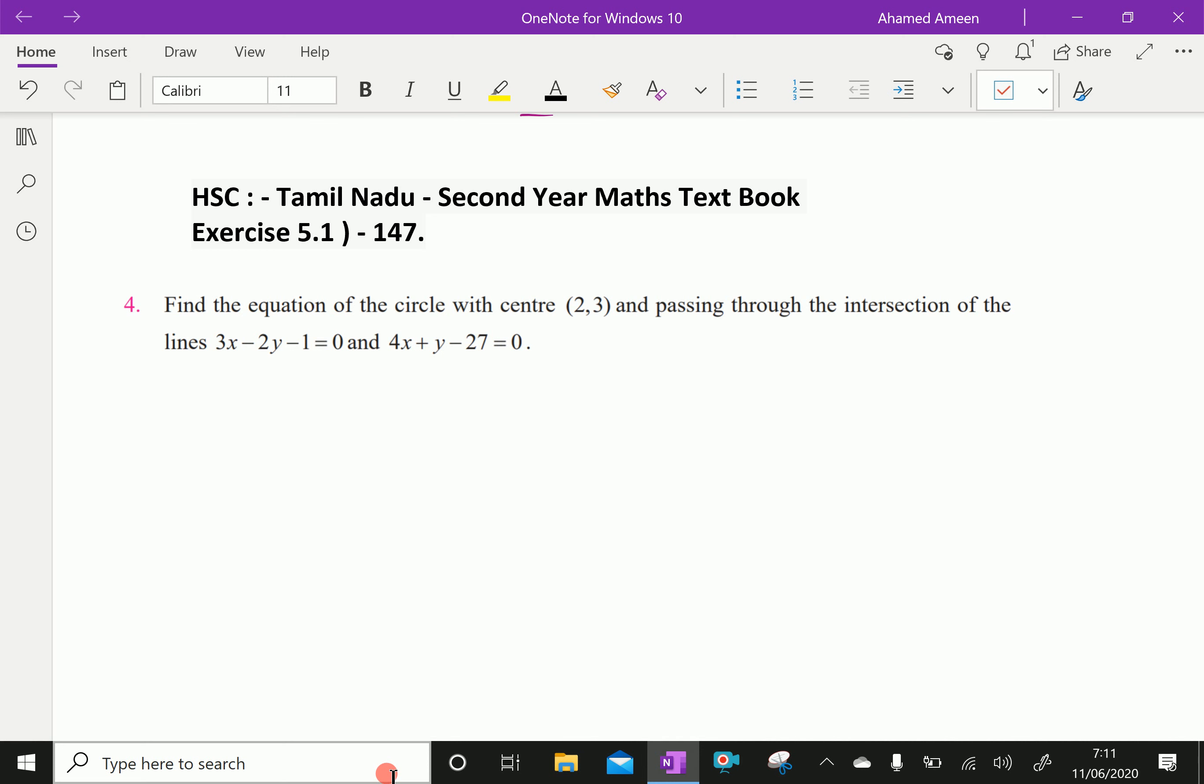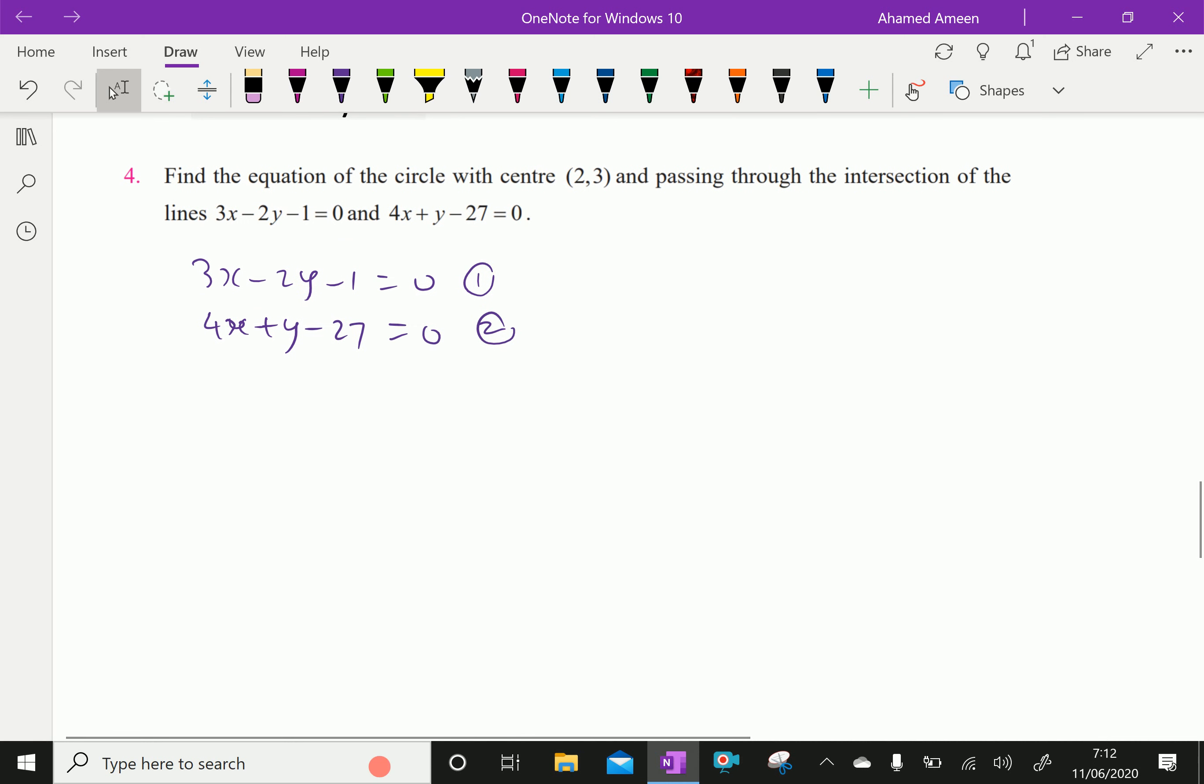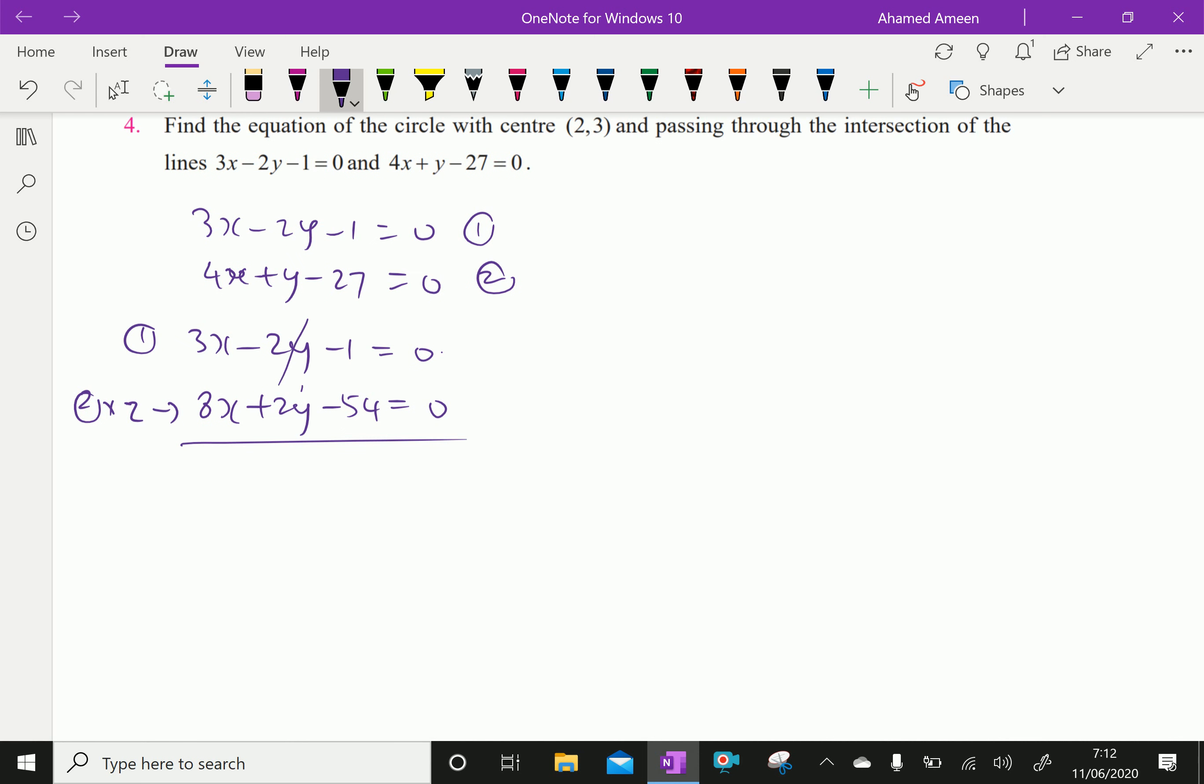Now we have to solve this equation first. 3x minus 2y minus 1 equal to 0. Equation 1, write as it is: 3x minus 2y minus 1 equal to 0. Equation 2 multiplied by 2 gives 8x plus 2y minus 54. 2 into 27 is 54. Then, addition becomes cancellation of y terms. So, 11x equal to 55.